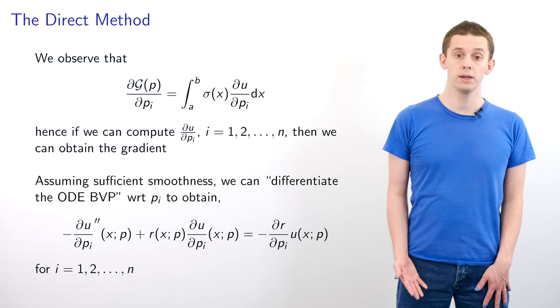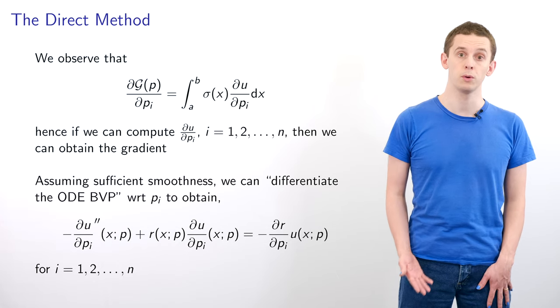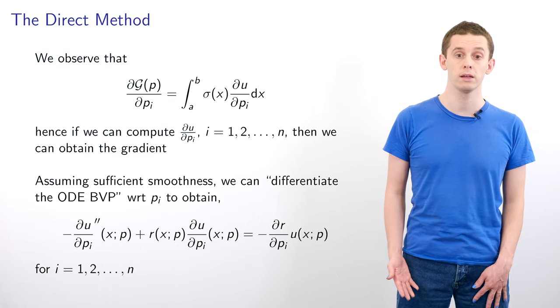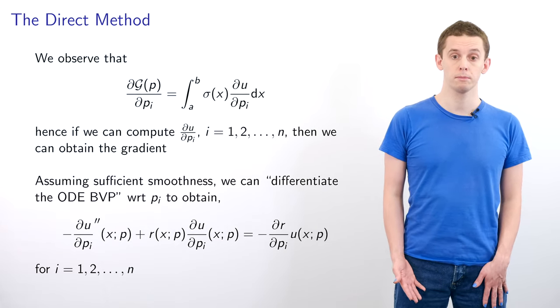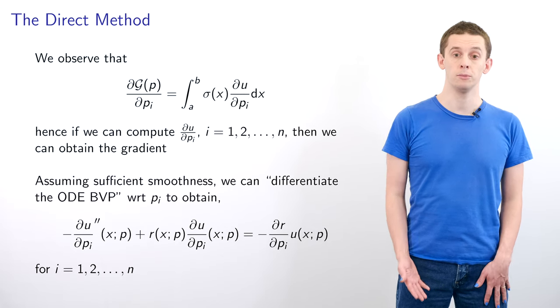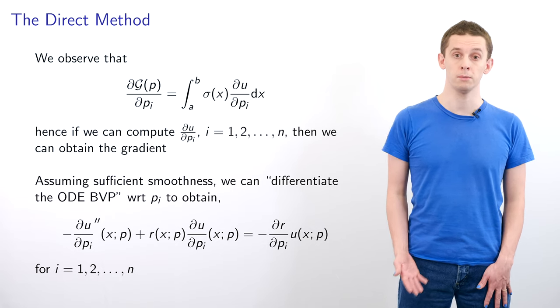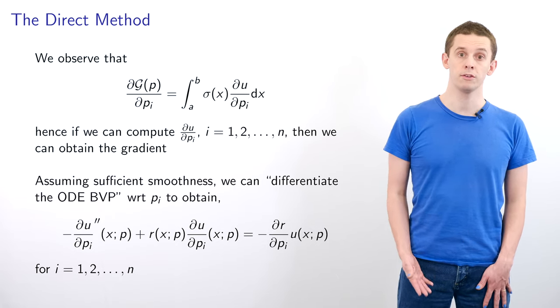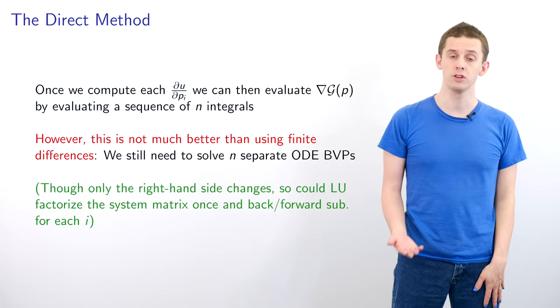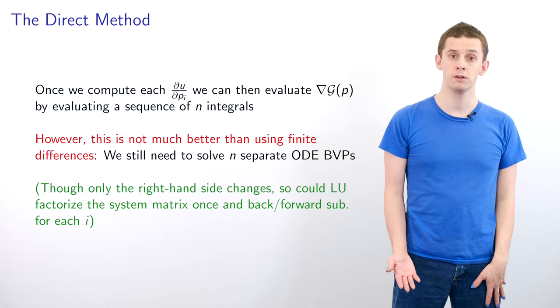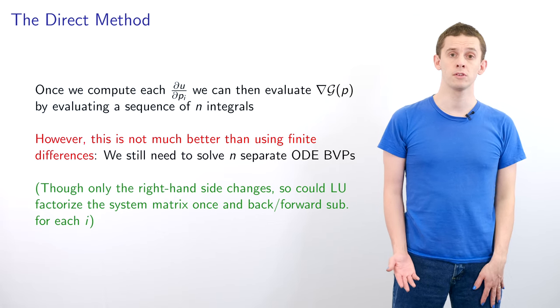Assuming sufficient smoothness, we can differentiate the ODE boundary value problem with respect to p_i to obtain: -d²u/dp_i + r(du/dp_i) = -(dr/dp_i)u, for i=1,...,n. Once we compute each du/dp_i, we can evaluate the gradient of G by performing a sequence of n integrals. This gives us the direct method.